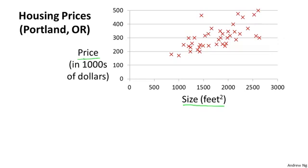Let's say that given this data set, you have a friend that's trying to sell a house. And let's say your friend's house is of size 1250 square feet, and you want to tell them how much they might be able to sell the house for. Well, one thing you could do is fit a model, maybe fit a straight line to this data. And based on that, maybe you could tell your friend that it looks like they could sell the house for around $220,000.